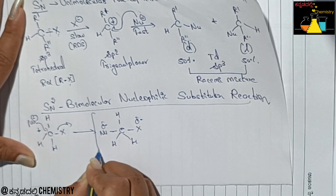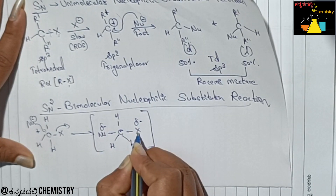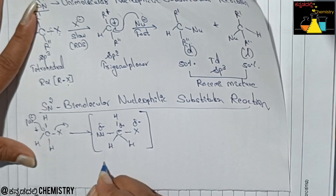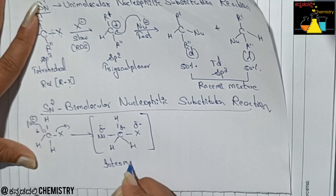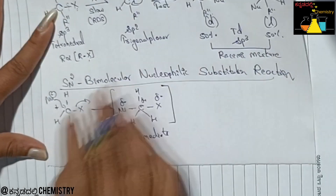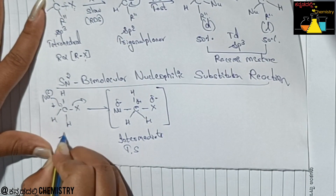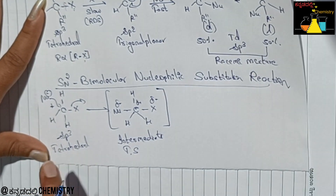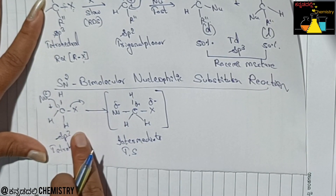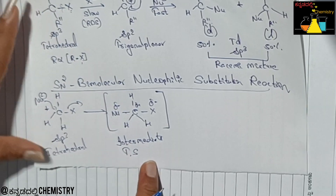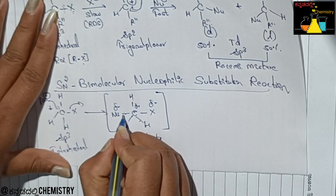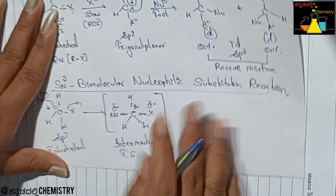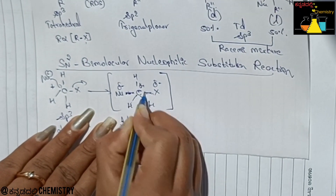There is partial negative charge formation on the nucleophile. Halogen becomes an electron-rich species with delta-negative charge, and carbon gets a delta-positive charge. This forms the intermediate or transition state, with sp3 hybridization. The dotted structure shows the bond forming and breaking simultaneously — dotted line and dashed line representation.